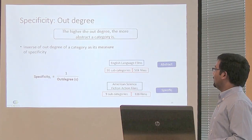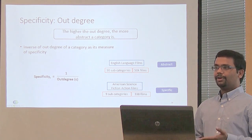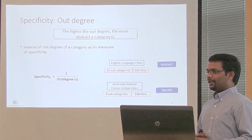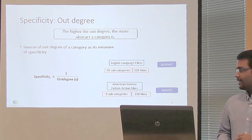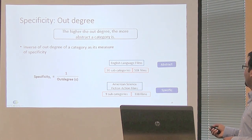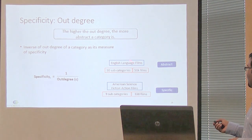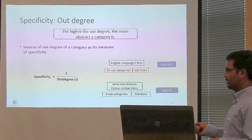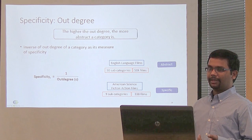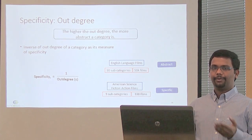The third measure is based on out-degree: the number of direct children of a category becomes its out-degree. The higher the out-degree, the more abstract the category. For example, 'English language films' has 30 sub-categories and 51,000 films, while 'American science fiction action films' has only 9 sub-categories and 38 films — making the latter a very specific category. We take the inverse of out-degree to measure specificity. These are the three measures explored for the specificity characteristic.